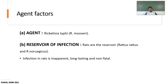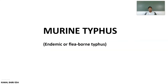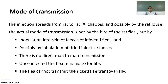The agent factor is Rickettsia typhi, also called Rickettsia mooseri. The reservoir of infection is rats; the main species are Rattus rattus and Rattus norvegicus. Infection in rats is inapparent, long-lasting, and non-fatal, which is why rats are the most dangerous reservoirs for Murine Typhus.